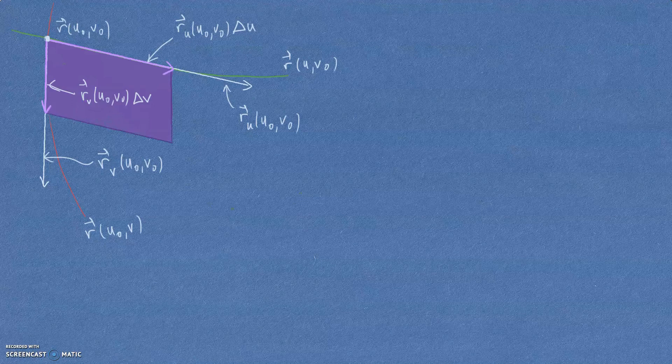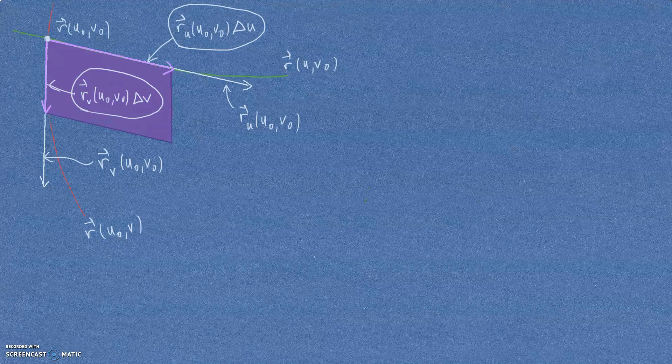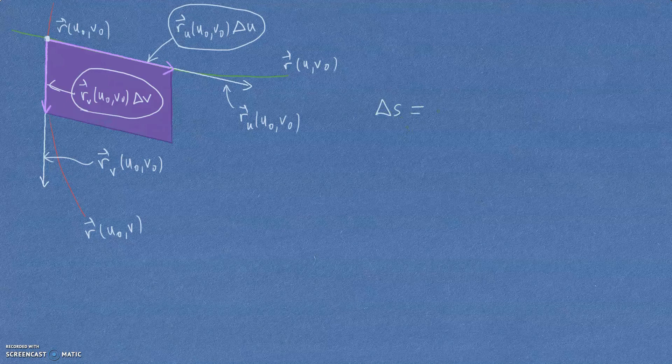Okay, so this purple parallelogram area is obtained by taking the cross product of this and this because we know that cross products of vectors find the area of the parallelogram that has those vectors as sides. Now, of course, we want the magnitude of that. That's how you find an area. So we're going to just say that our little piece of area that we're trying to find here is the cross product of those two things.